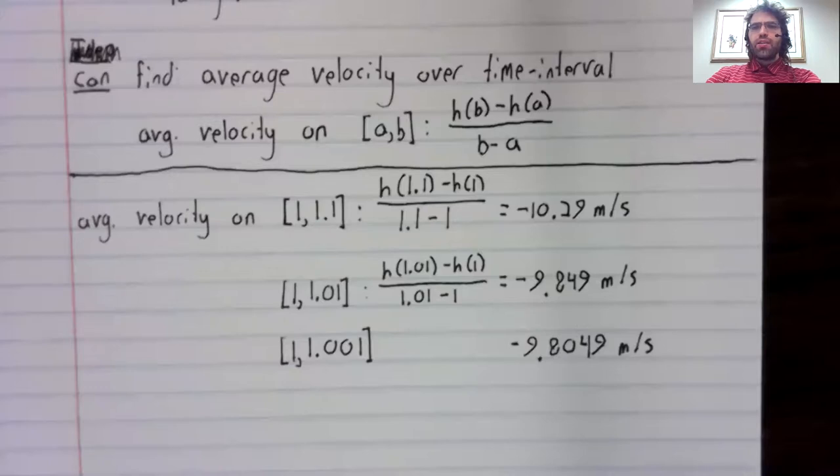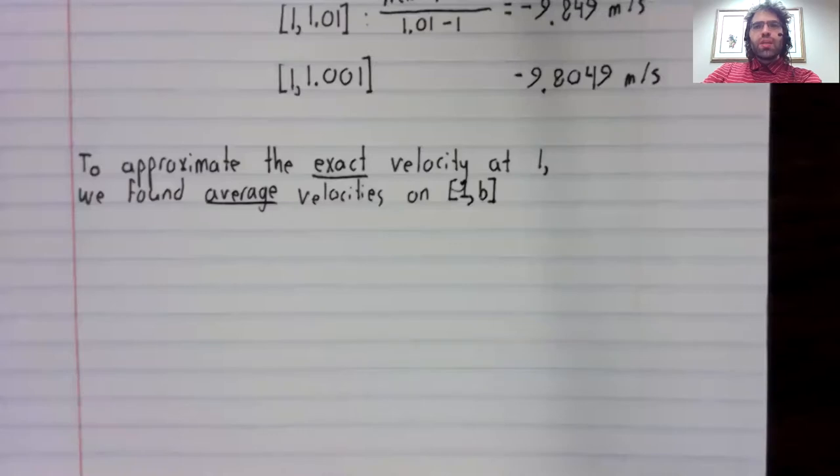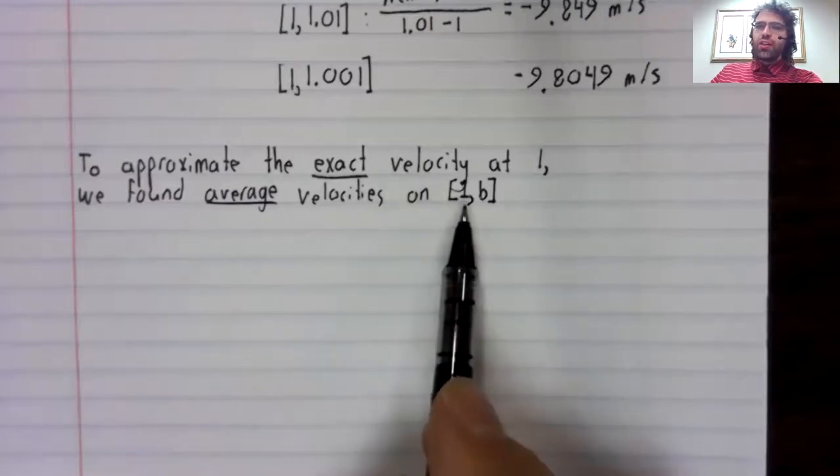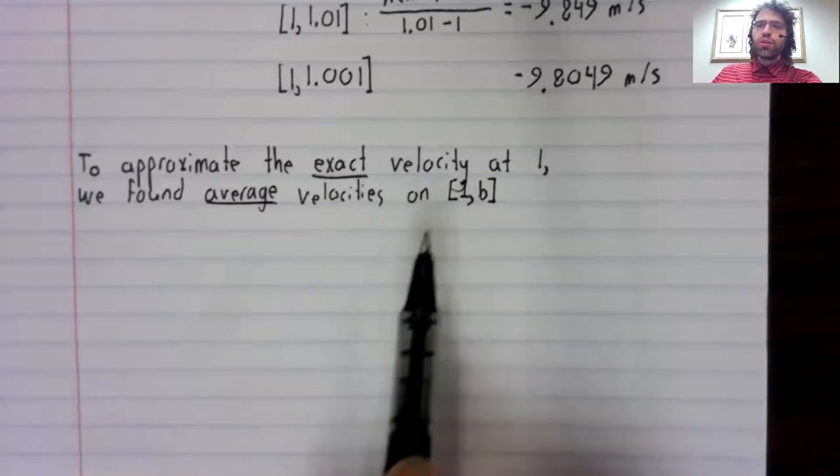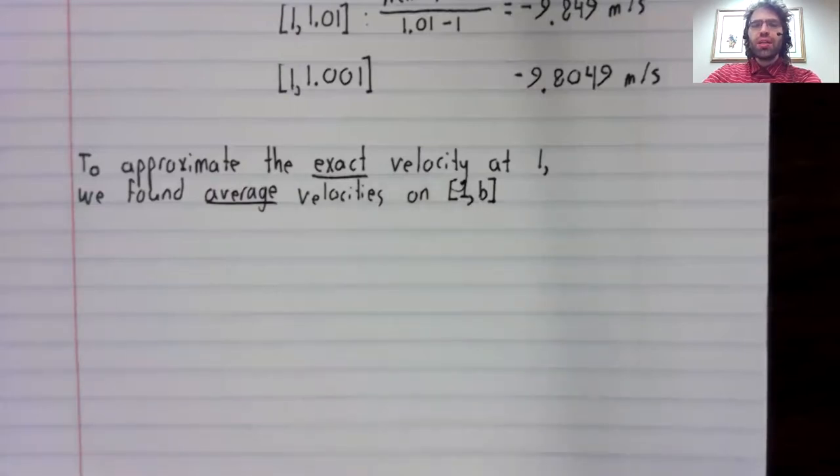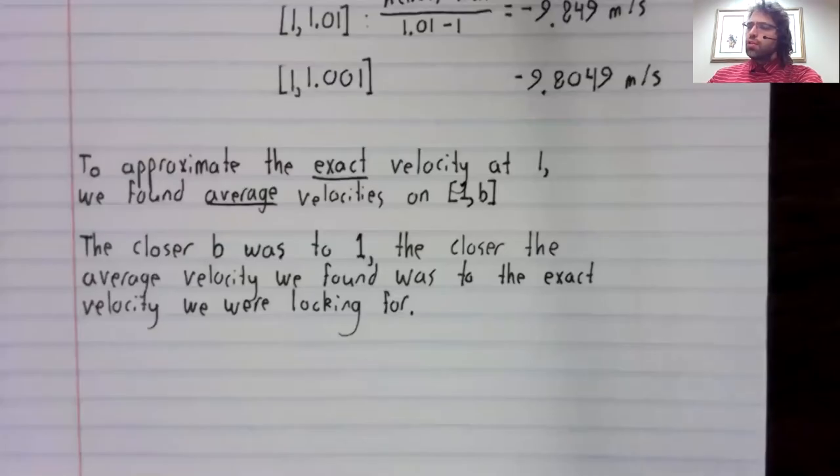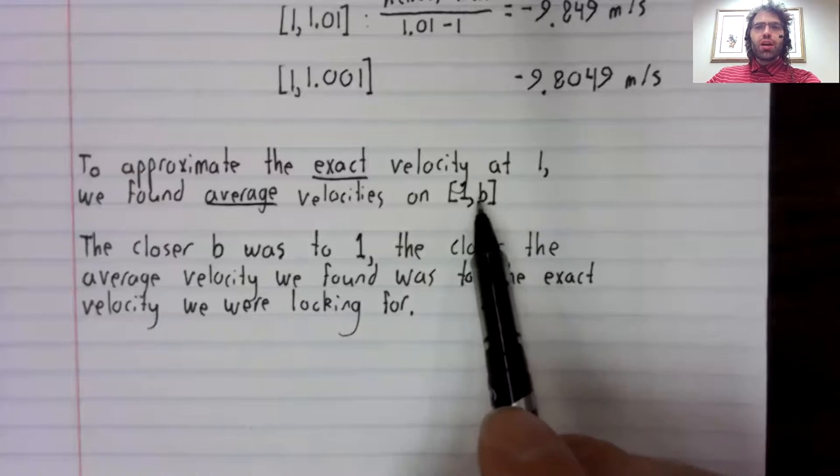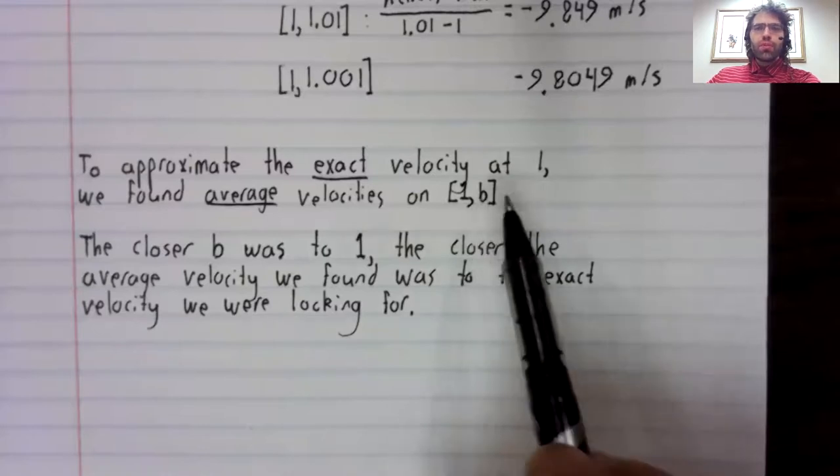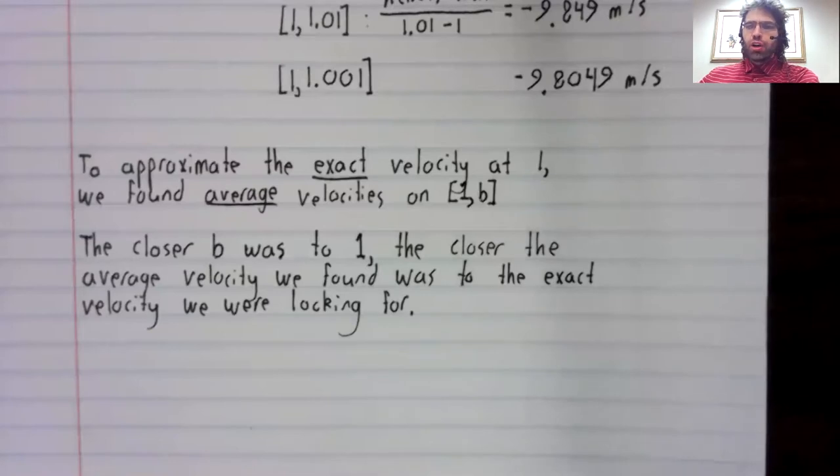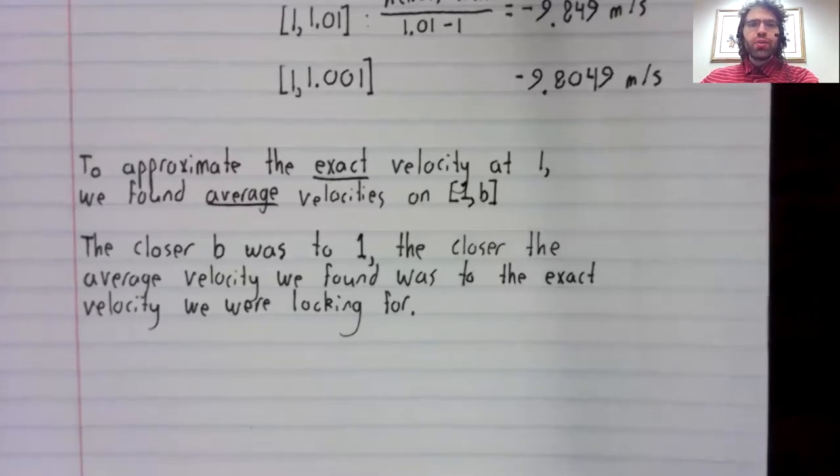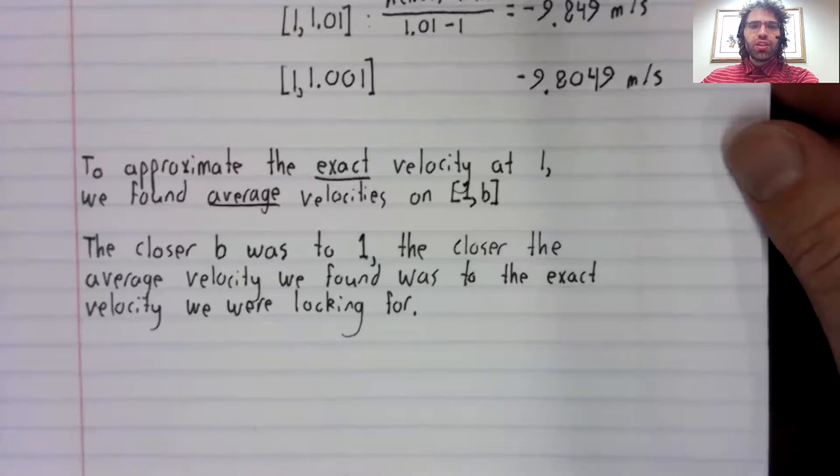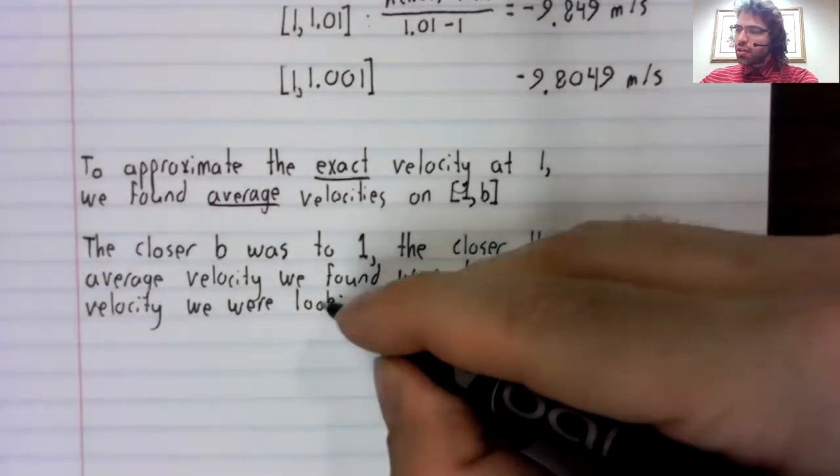Let's summarize this idea. To approximate the exact velocity at one, we looked at average velocities on intervals of the form one comma B. The closer this B got to being one, the closer the average velocities we found were to the exact velocity we were looking for.